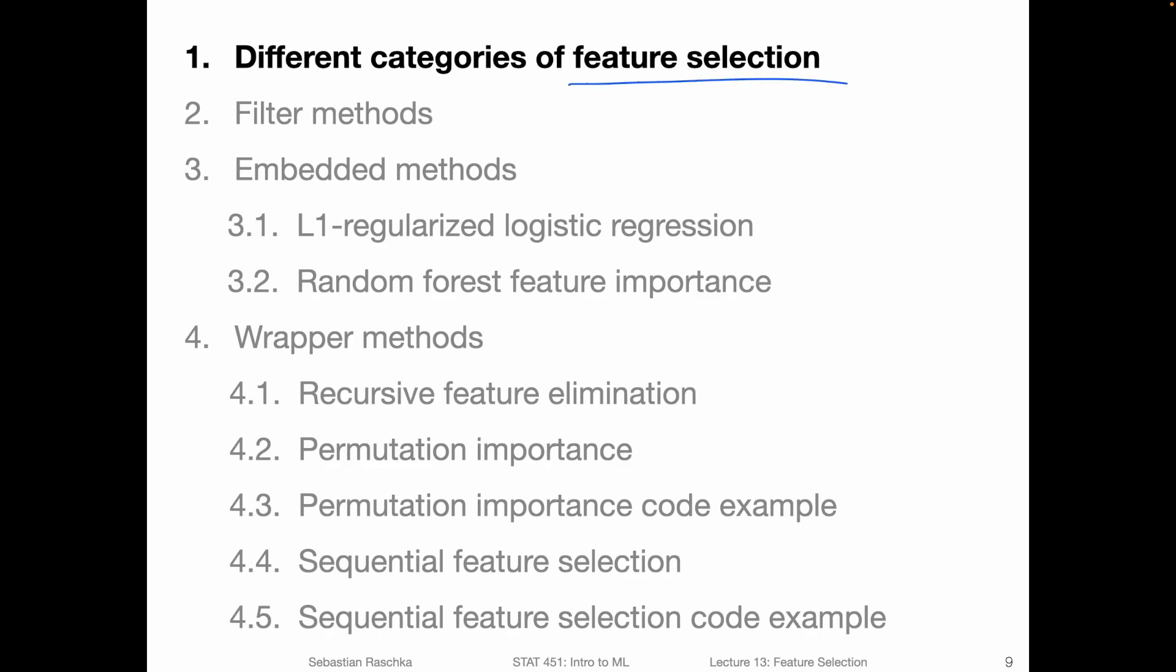In the previous video, we learned that feature selection is a subcategory of dimensionality reduction. We learned that in feature selection, we select subsets of features.